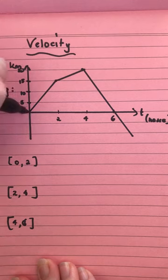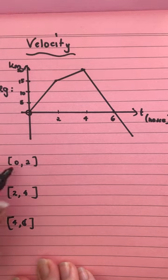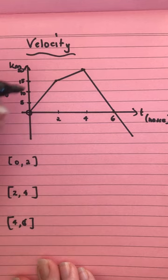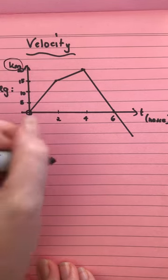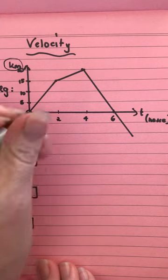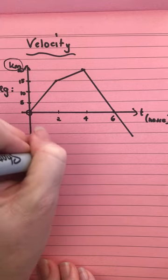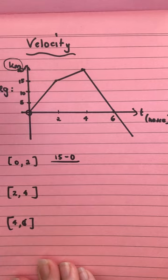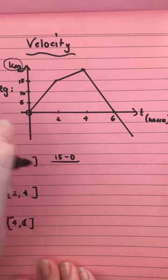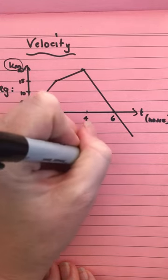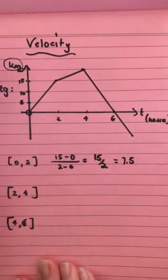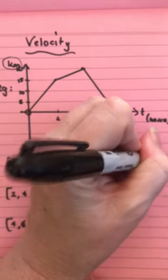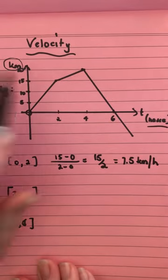So we have got some information from our graph. We want to look at the interval 0 to 2. So we know between 0 and 2 it has gone up 15, and that's kilometers. So we can set it up with the rule doing 15 take 0 over 2 take 0, so we get 15 over 2, so 7.5, and we can write that as kilometers per hour because we've got hours and we've got kilometers there.